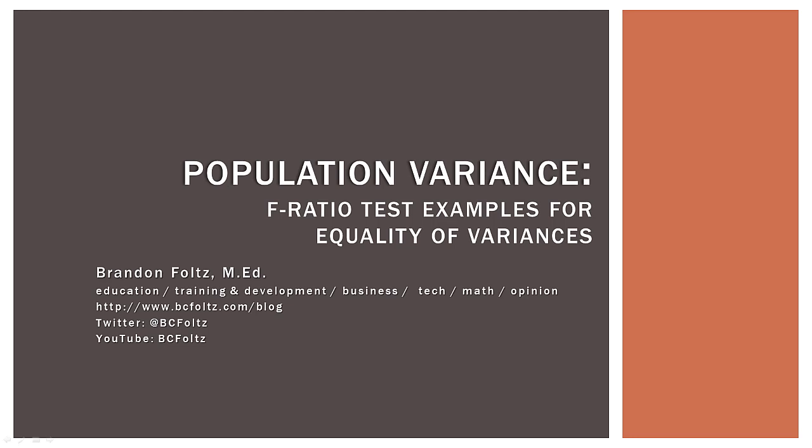Okay, so that wraps up our two practice problems on testing as to whether or not two population variances are equal. Again, using the F ratio and the F distribution. It's actually a fairly straightforward, simple test, but it does prepare us for what's coming next. And that is ANOVA, the analysis of variance.